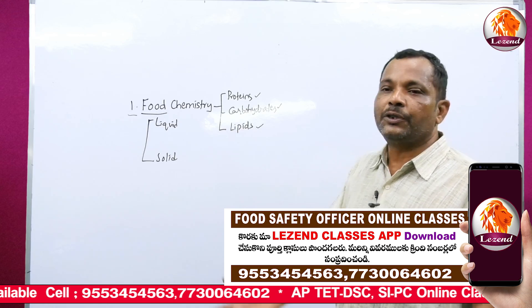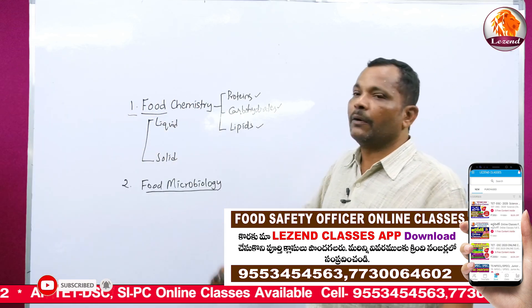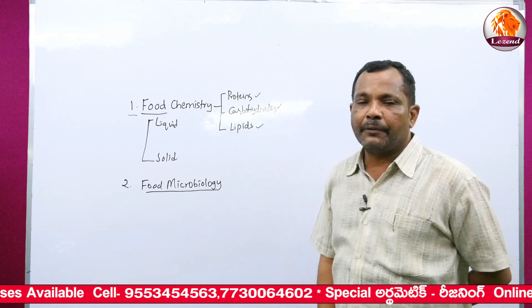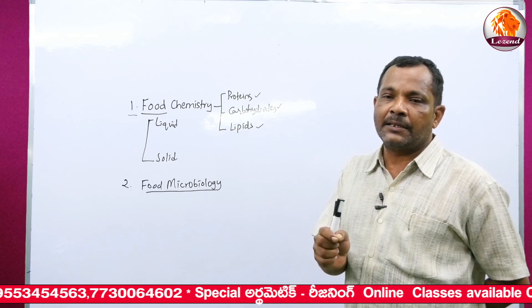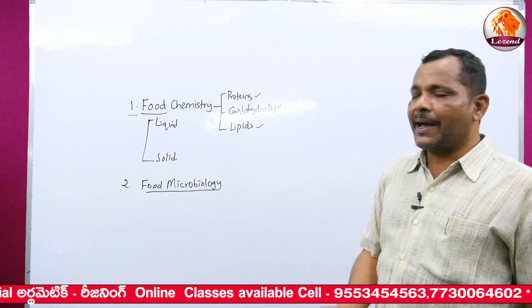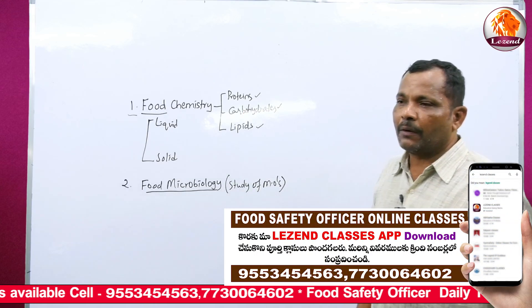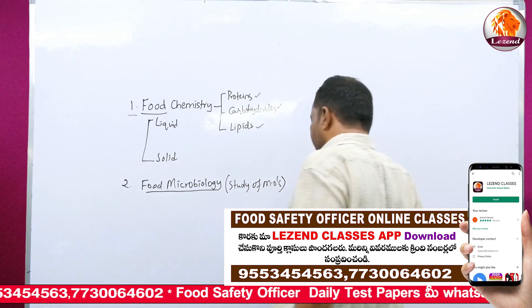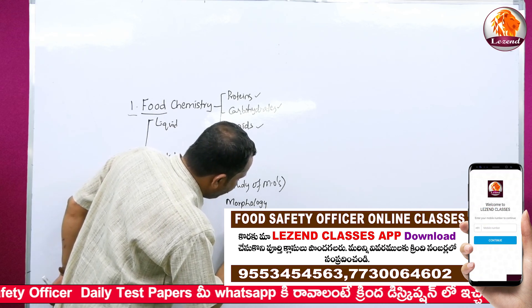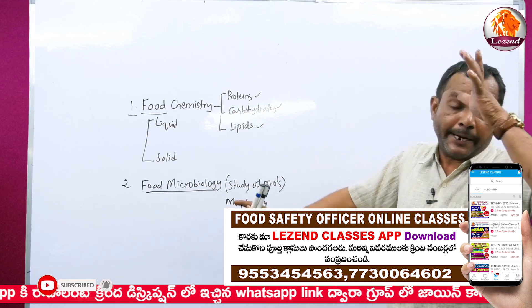The second unit is food microbiology. By definition, microbiology is the study of microorganisms. About a microorganism, we study three important things related to the food industry: morphology, physiology, and biochemistry.